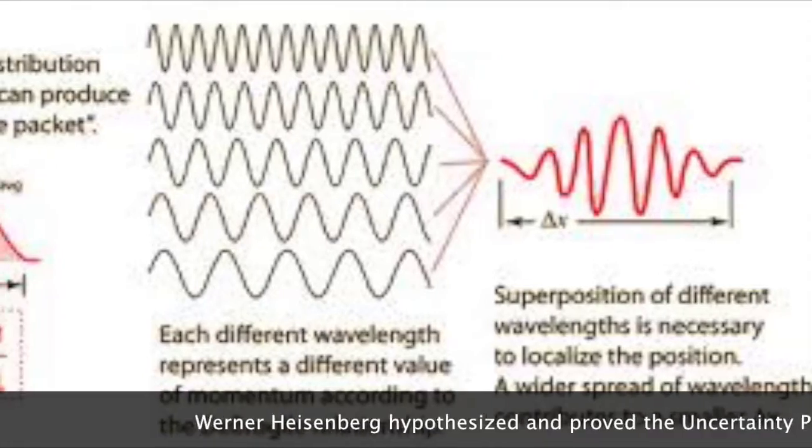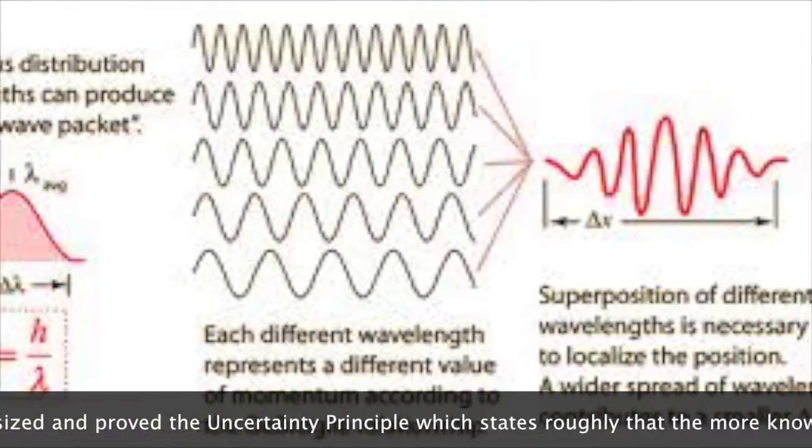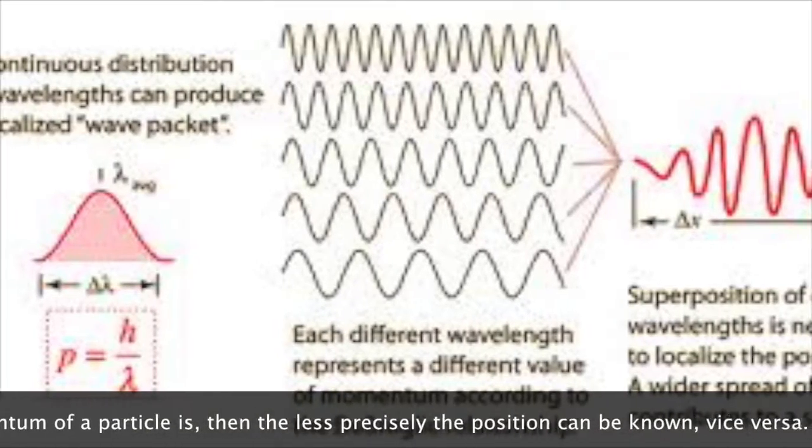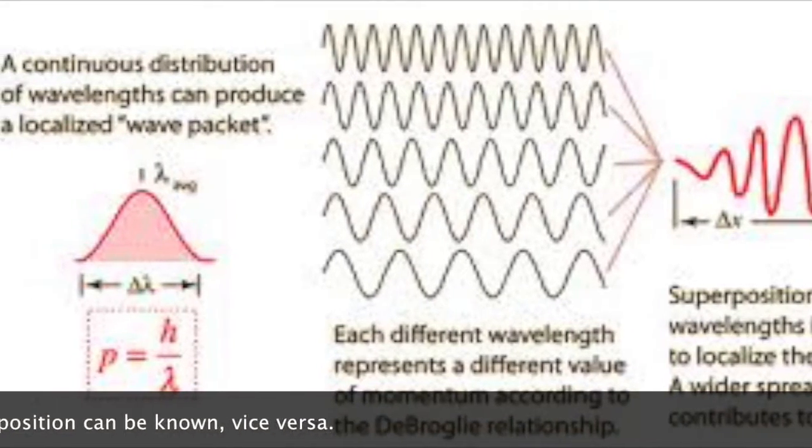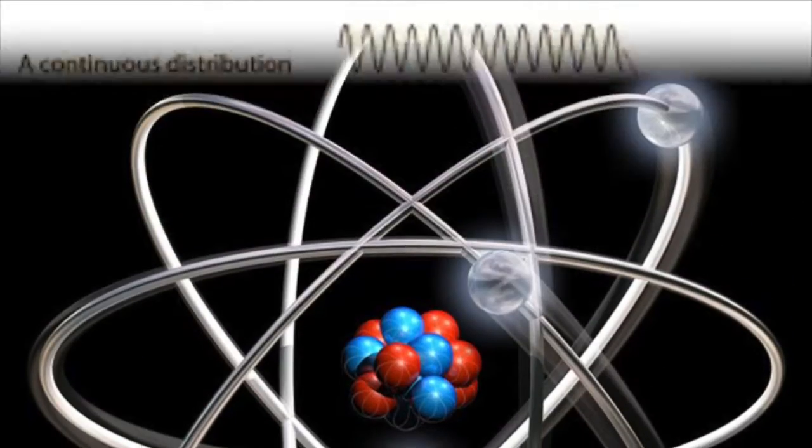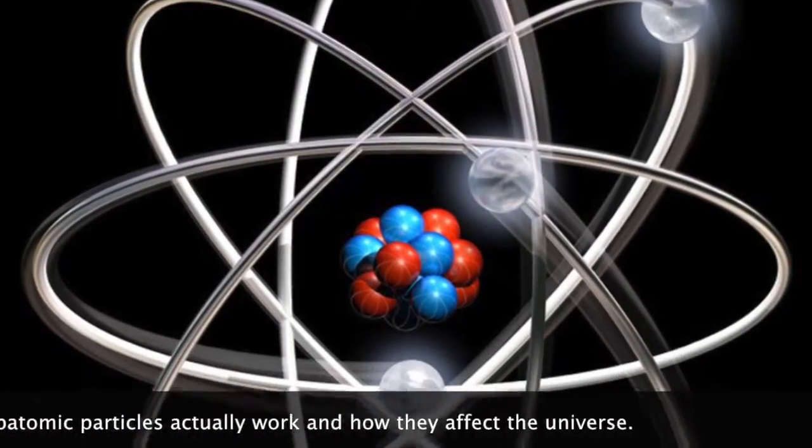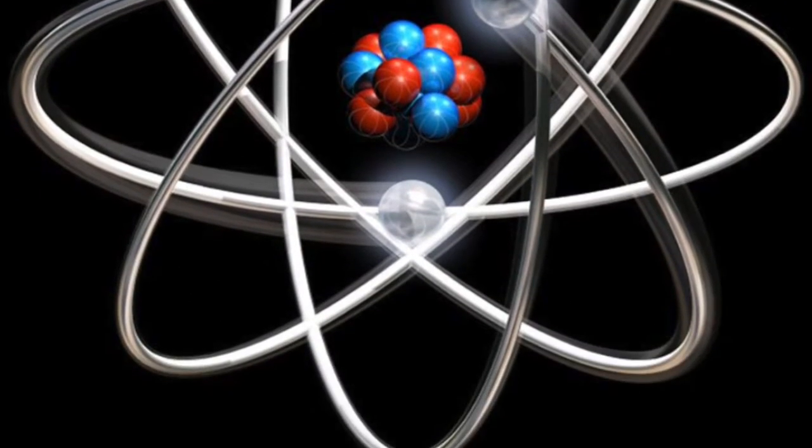Werner Heisenberg hypothesized and proved the uncertainty principle, which states roughly that the more known the momentum of a particle is, then the less precisely the position can be known, and vice versa. This study then evolved into the birth of quantum mechanics, which explains how subatomic particles actually work and how they affect the universe.